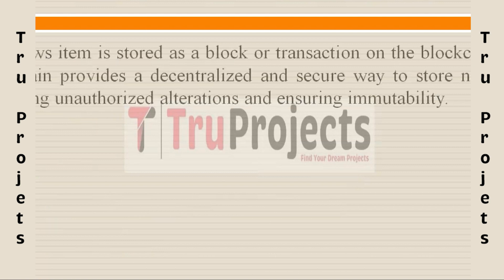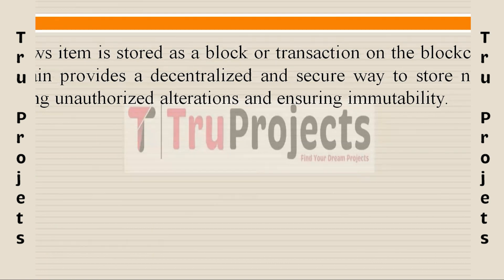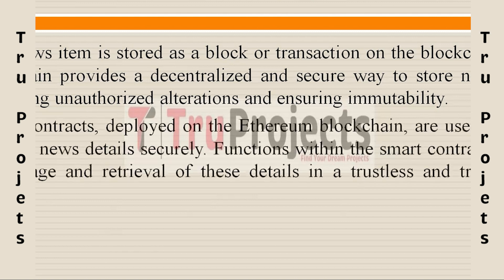Each news item is stored as a block or transaction on the blockchain, ensuring decentralized and secure storage. This prevents unauthorized alterations and maintains immutability. Smart contracts deployed on the Ethereum blockchain securely manage user and news details, defining functions for secure storage and retrieval. Utilizing Ethereum's blockchain, the system achieves a trustless and transparent way to handle user and news data, enhancing overall security and reliability.